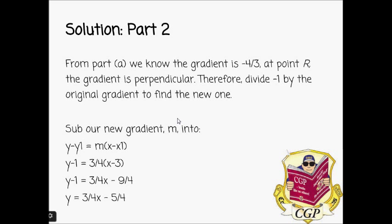So to get the new gradient, we're going to divide minus 1 by the old gradient, which gives us an answer of 3 over 4. So we substitute our values into this formula here to find the equation.